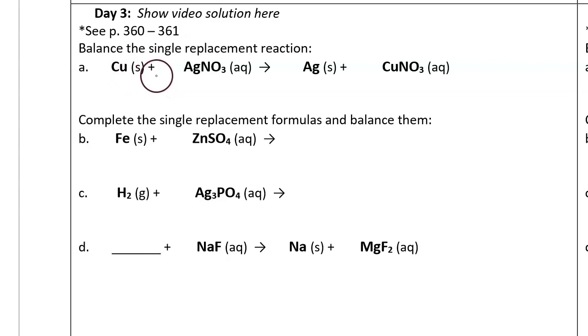Solid copper combined with silver nitrate, which has been dissolved in water, produces solid silver plus copper nitrate, which is dissolved in water. This is a single replacement reaction because of its format. There is a single element combined with an aqueous solution, and the product is a single element and an aqueous solution. When you have that single element combined with the solution, that's why it's called single replacement.